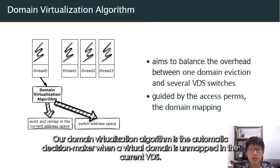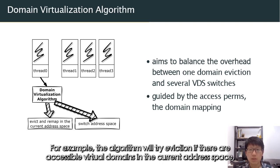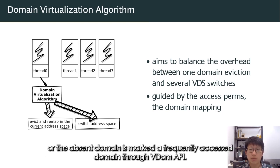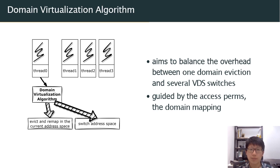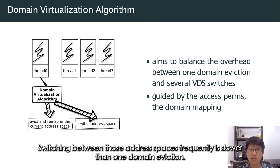Our domain virtualization algorithm is the automatic decision maker when a virtual domain is unmapped in the current address space. It aims to balance the overhead between one optimized domain eviction and several potential address space switches. For example, the algorithm will try eviction if there are accessible virtual domains in the current address space, or the unmapped domain is marked as frequently accessed via the VDOM API. This is because we assume the thread will access multiple domains across different address spaces repeatedly, and switching between them frequently is slower than one domain eviction.